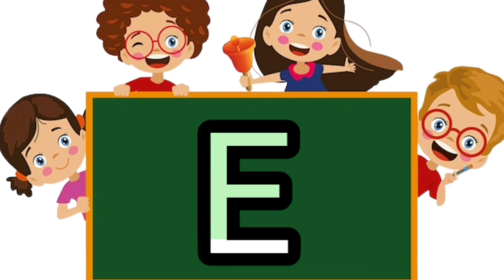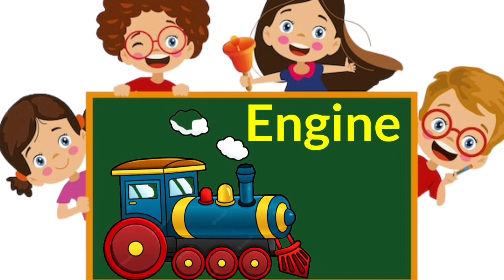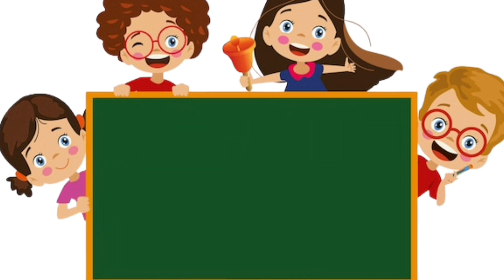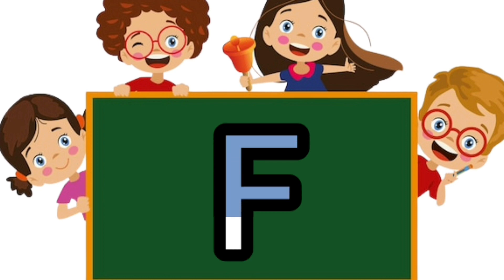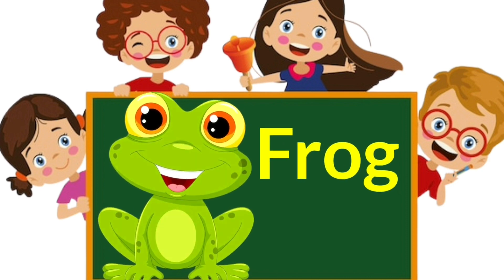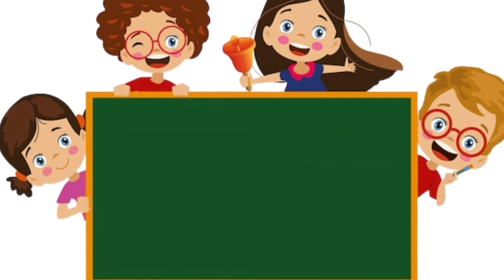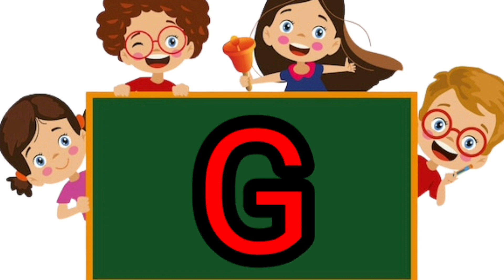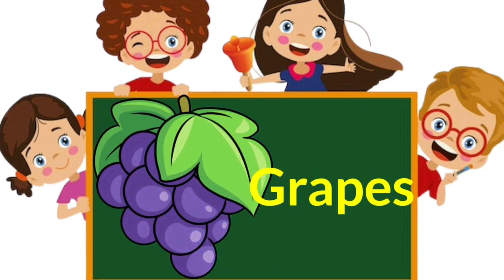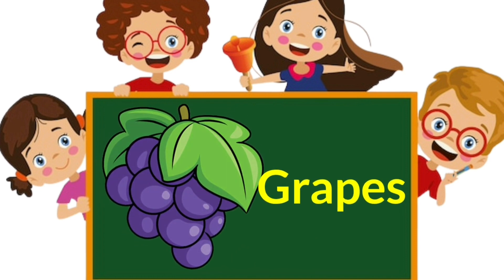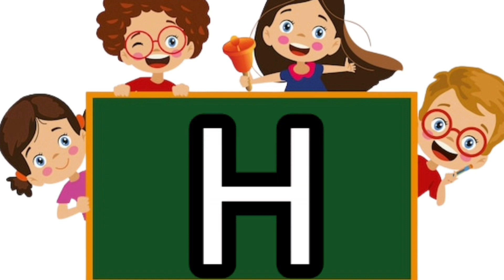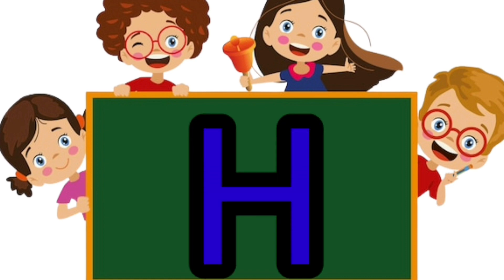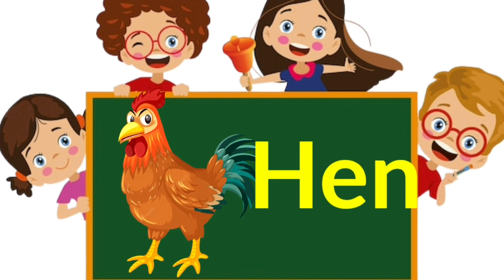E. E is for Engine. F. F is for Frog. G. G is for Grapes. H. H is for Hen.